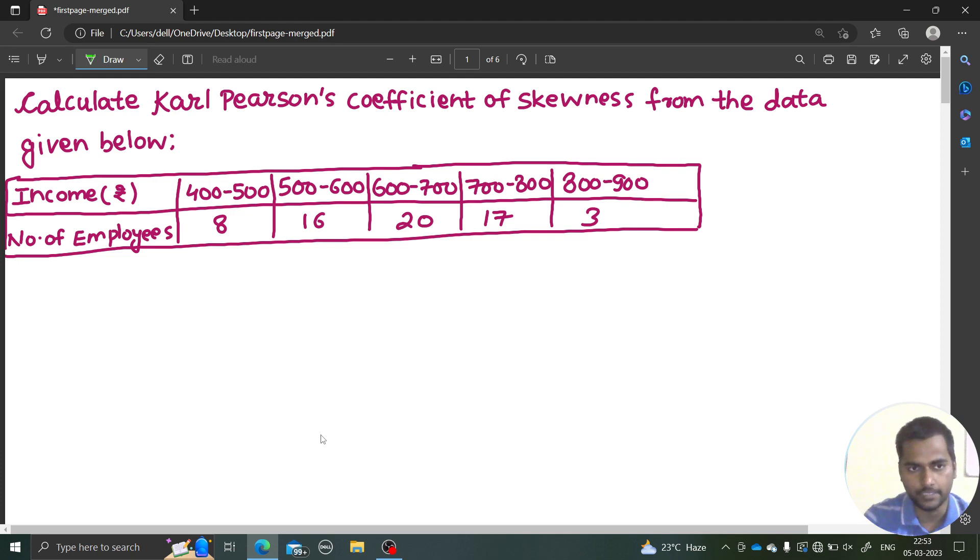We have to calculate the Carl Pearson's coefficient of skewness from the data given below. It's in the form of the class interval. In the previous video we saw how to calculate the Carl Pearson's coefficient for ungrouped data. And this time we have group data in the form of class intervals.